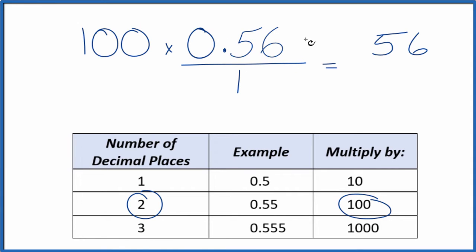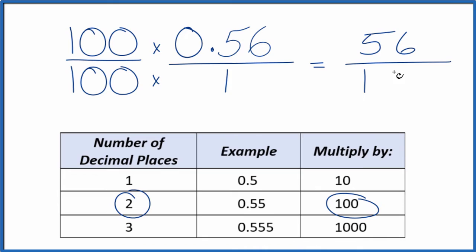But I can't just multiply the numerator by 100. I also need to multiply the denominator by 100. That's because 100 over 100 is just 1. 100 divided by 100 is 1. So when we multiply by 1, we don't change the value, just the way it's represented.